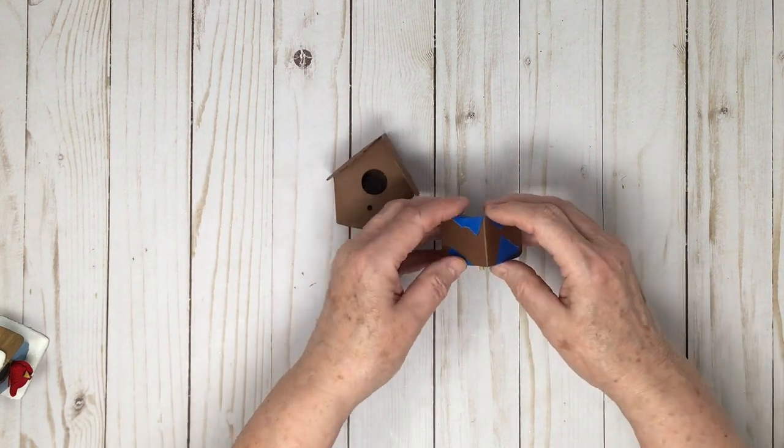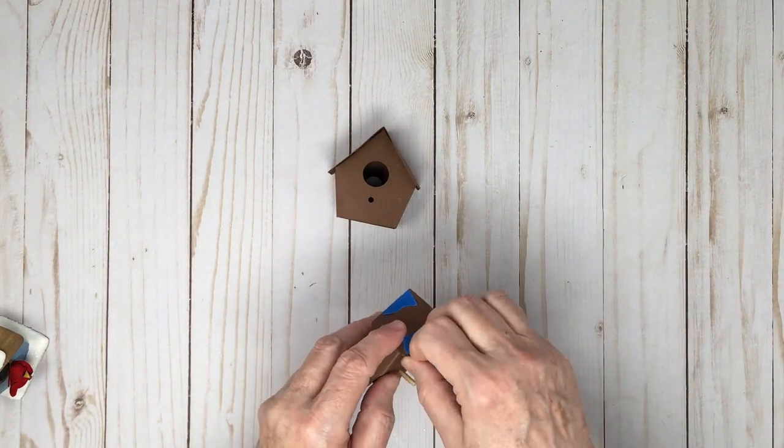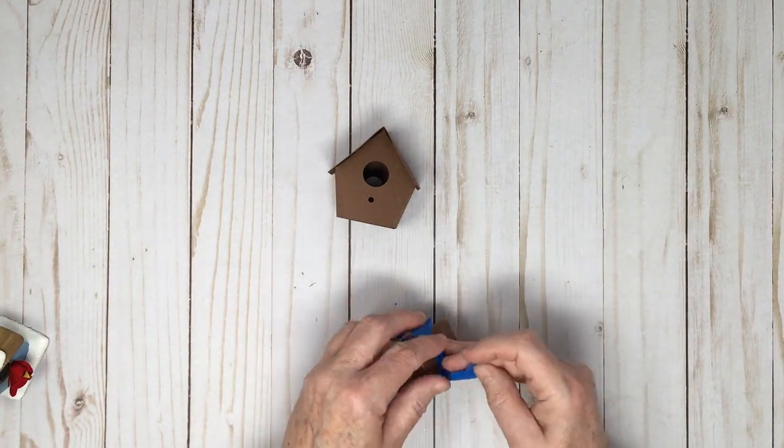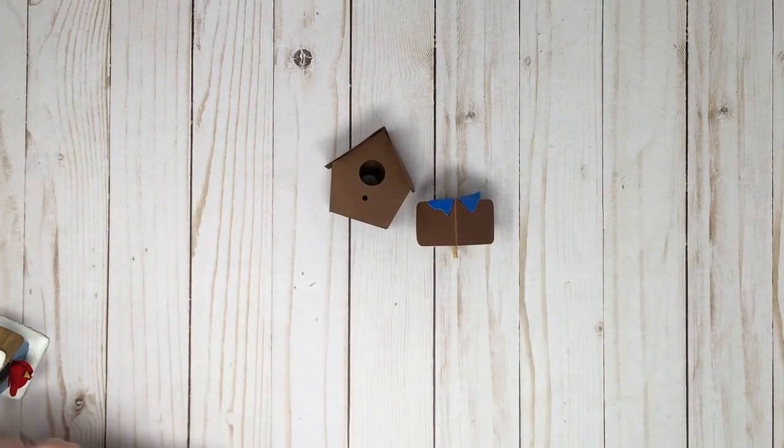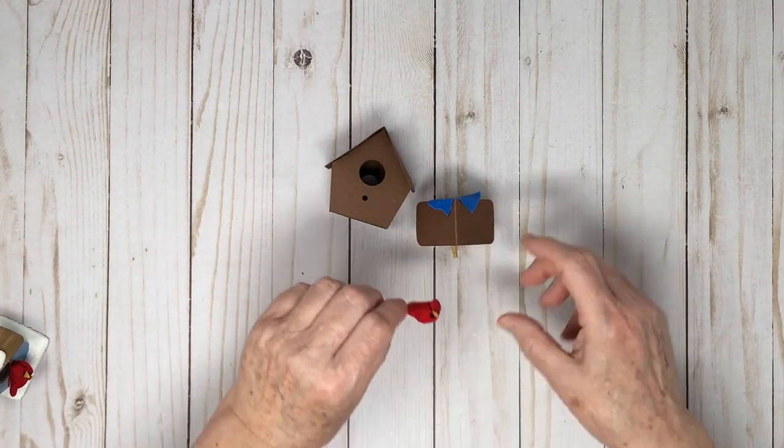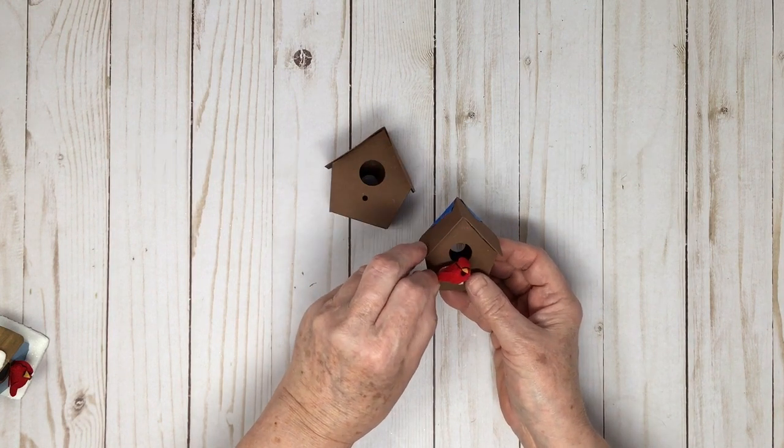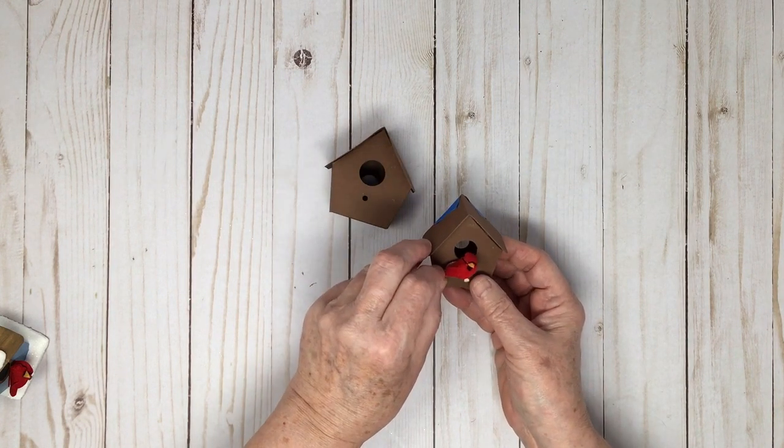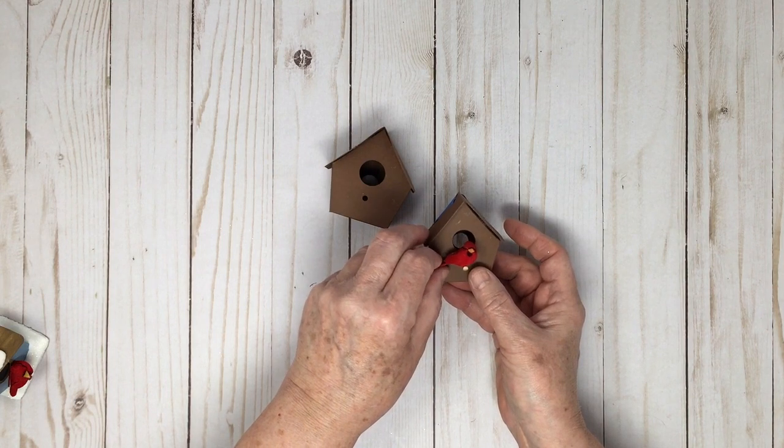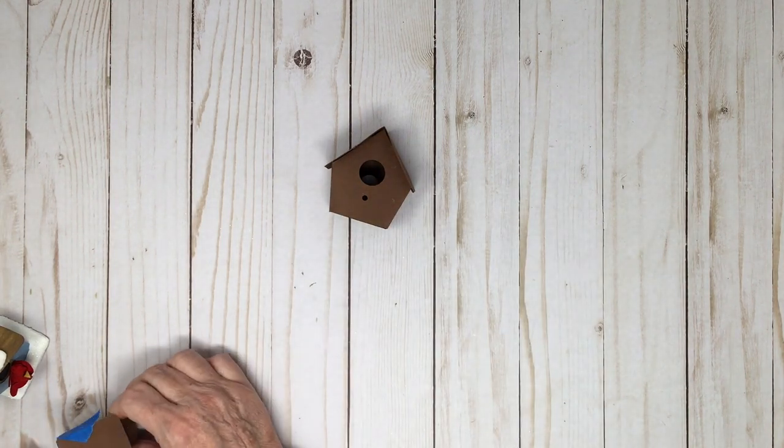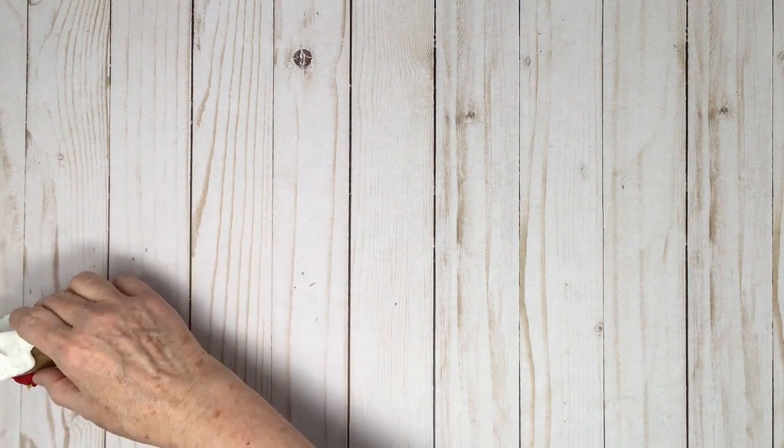Once it's dry you can put a bird on it. I got these cute little birds I ordered online, you can find them in hobby stores as well. Just again you can hot glue or use regular glue, you just have to wait longer for it to adhere. So the little bird is attached.